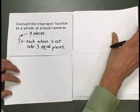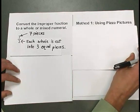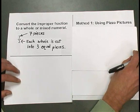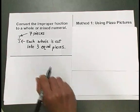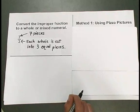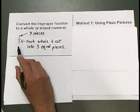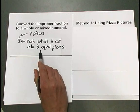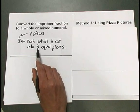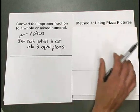The first way involves using pizza pictures. I'm going to cut each whole pizza into pieces. And because this fraction is 7 thirds, I'm going to cut each pizza into 3 equal pieces.